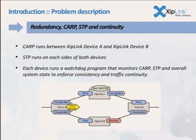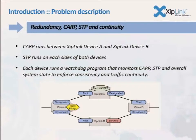We're running CARP on two Ziplink devices, and running STP on each side of each box. In order to optimize traffic properly, all forward packets and return packets must go through the same machine. We run watchdog programs that monitor the states of STP and CARP to make sure all these protocols converge, keeping packets continuously flowing through the system. What happens when you add VLANs to the picture? That becomes a problem.